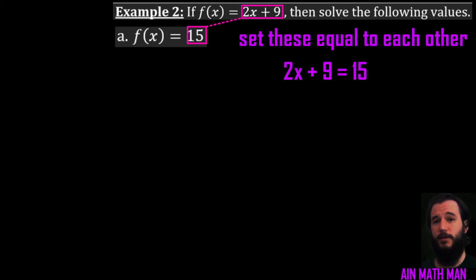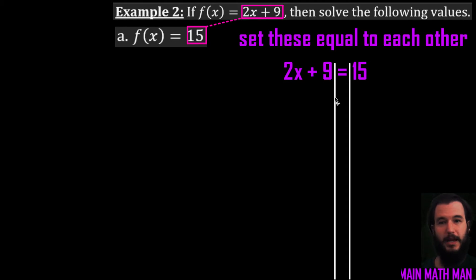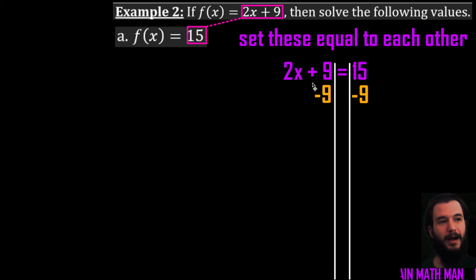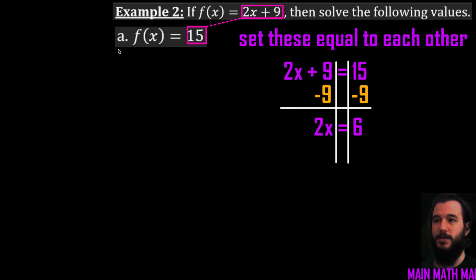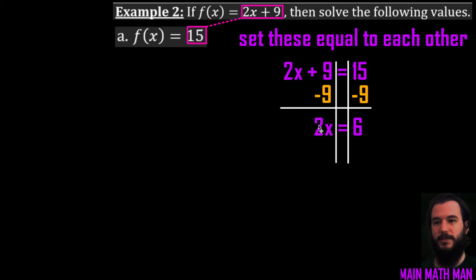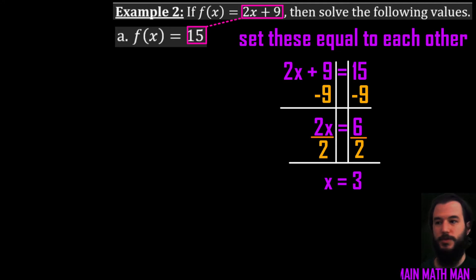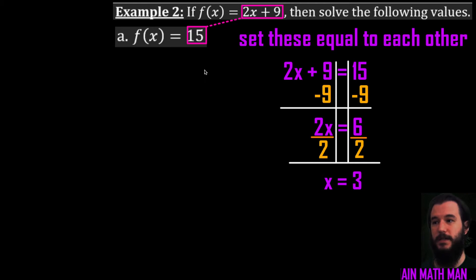Using inverse operations — whatever you do to one side, do to the other. I draw the equal sign down the whole way to keep both sides clear. On the left I need to isolate x, so I take one layer off at a time: subtract 9 from both sides. On the left I have 2x; on the right I have positive 6. Then divide both sides by 2, and x equals 3. So at the point x equals 3, our function equals 15 — ordered pair (3, 15).